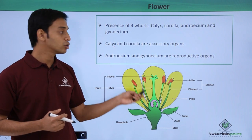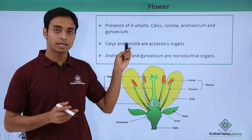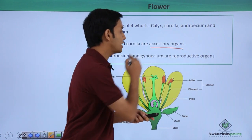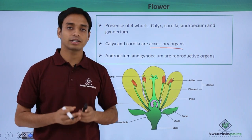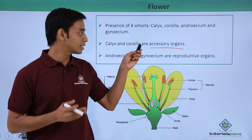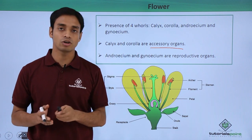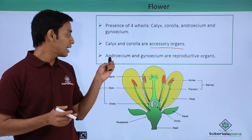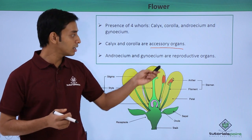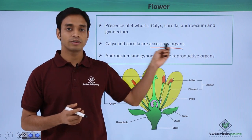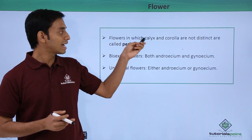The calyx and corolla — that is, sepals and petals — are the accessory organs, because they do not directly take part in sexual reproduction. In contrast, the androecium and gynoecium are directly involved in sexual reproduction, so they are known as the essential or reproductive organs.